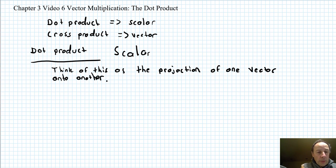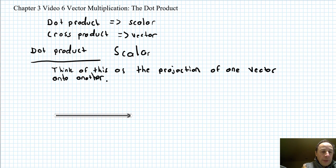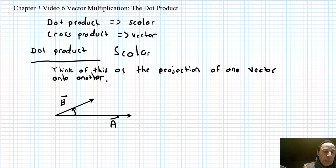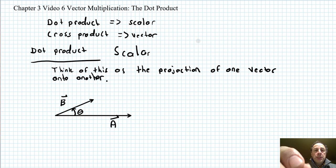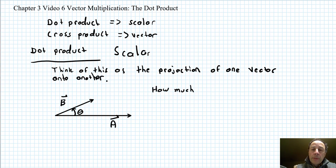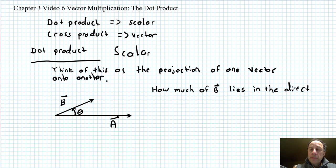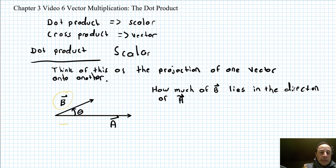Let's draw a vector A. Now I'm going to draw another vector B at some angle theta. So this one is A, this one is B, and there is some angle theta between them. The question we're trying to answer is: how much of vector B lies in the same direction as vector A?